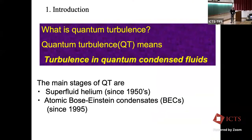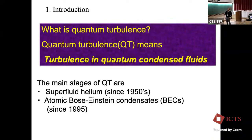So what is quantum turbulence? Quantum turbulence means turbulence in quantum condensed fluids. The main stages of quantum turbulence are superfluid helium since the 1950s, and the other is atomic Bose-Einstein condensates, BECs, since 1995.